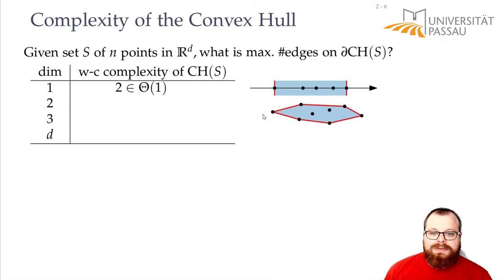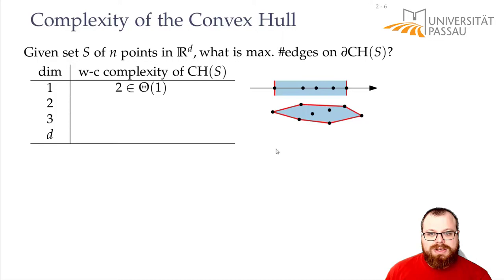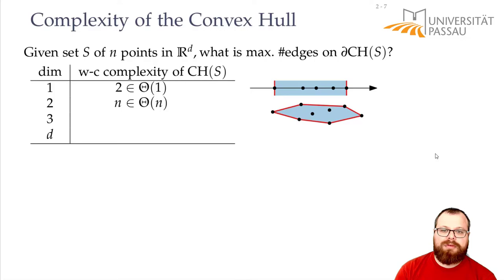If we are in two dimensions, which we also figured out in the first lecture, then we have the convex hull, which is just a polygon that contains all the points. So here the convex hull is a simple cycle. In the worst case it contains all the points, so in the worst case we have n edges.